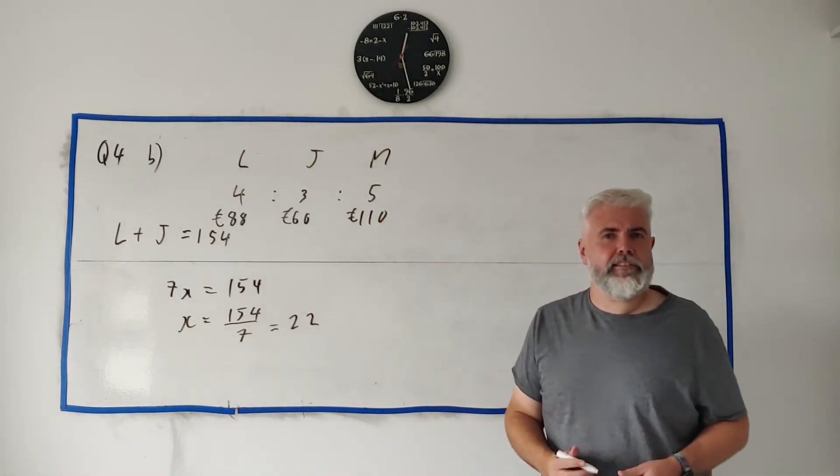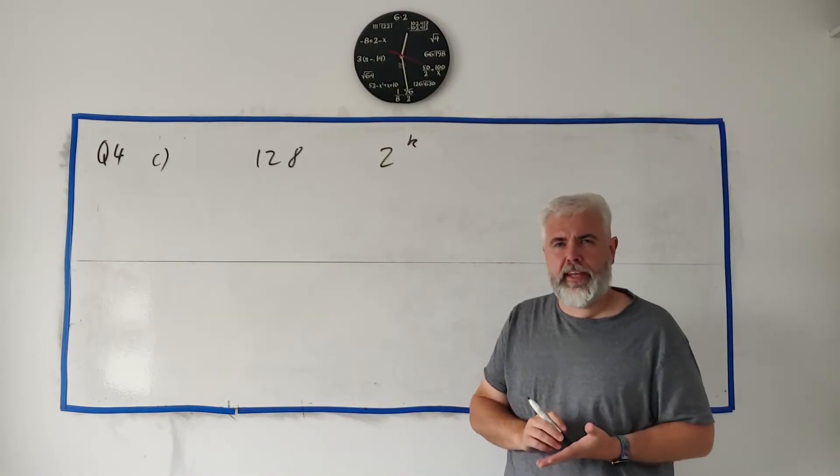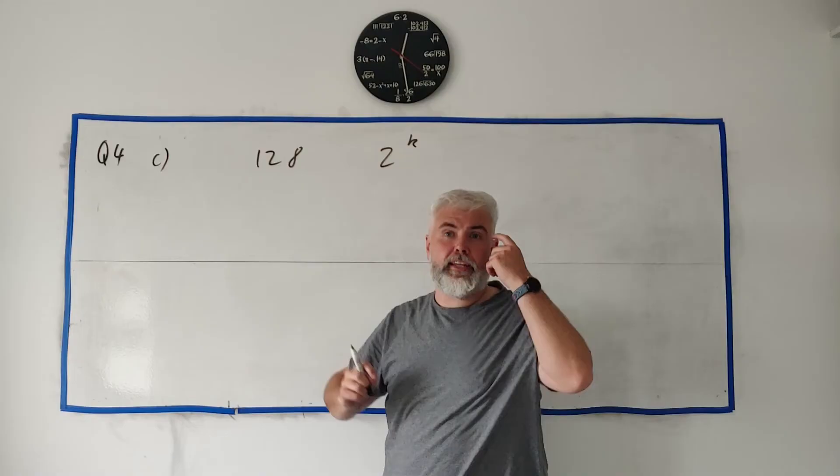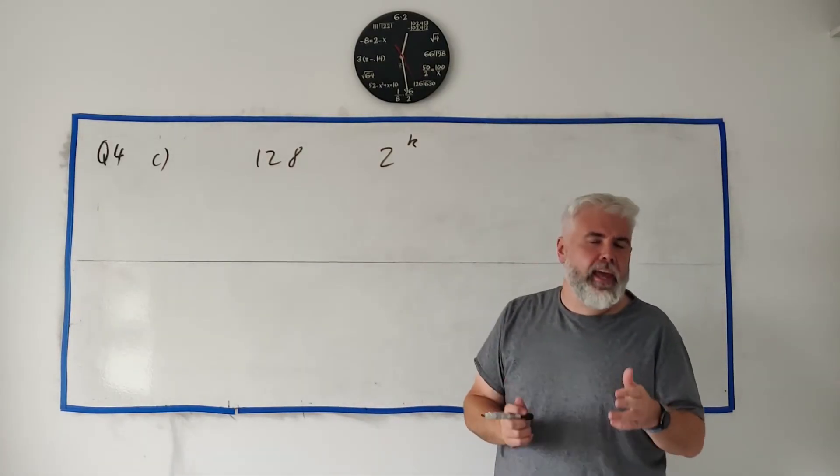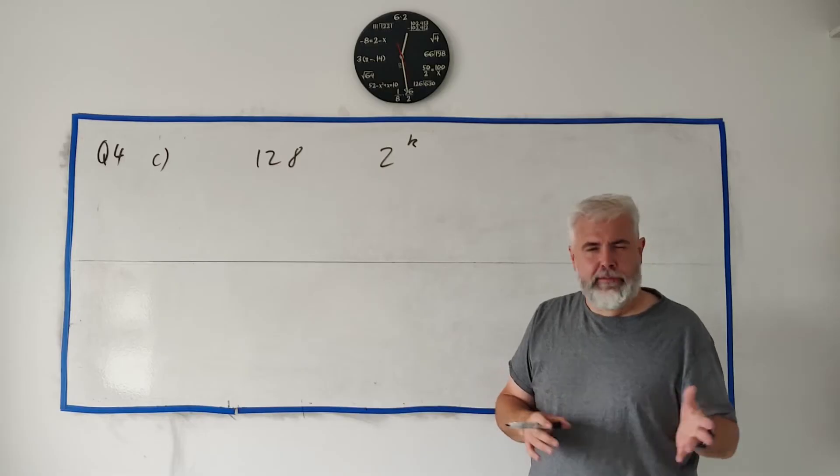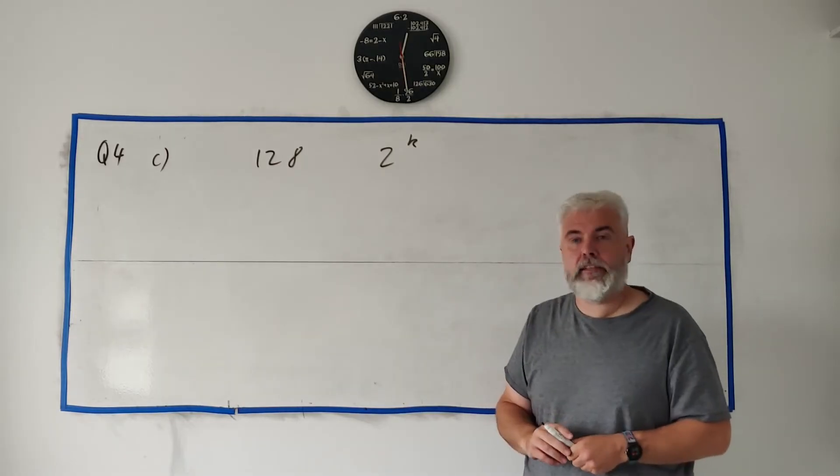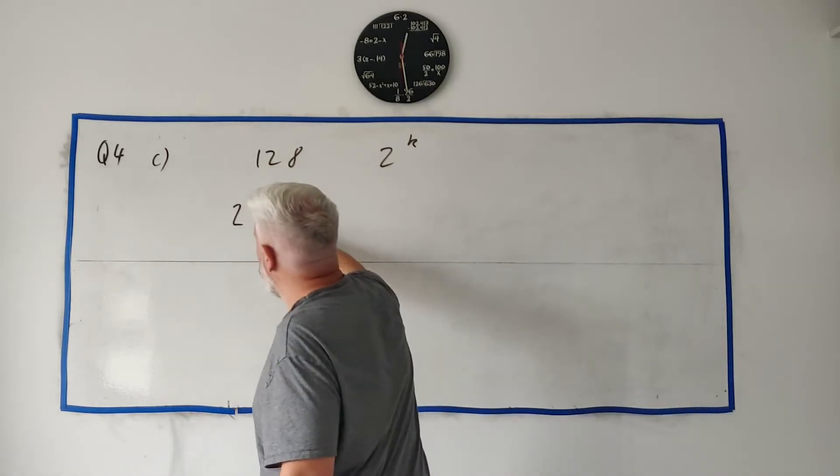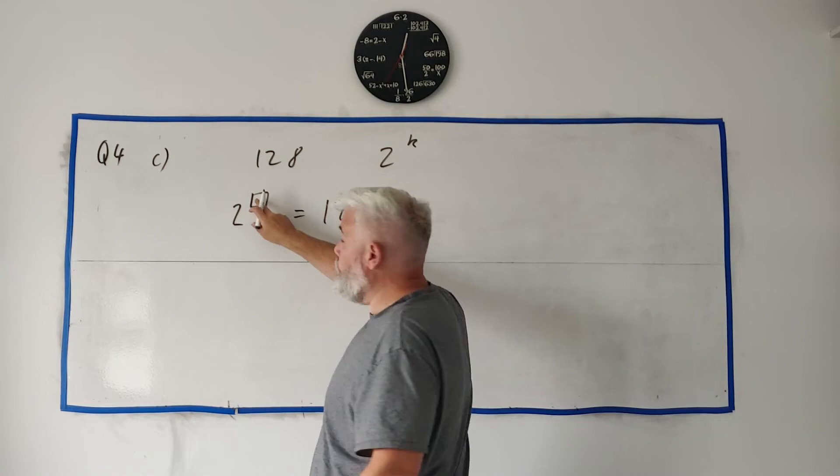In part C part 1, they asked you to write 128 in the form of 2 to the power of K, where K is an element of N. Very confusing way to write that. What they're really saying is 2 to the power of something is equal to 128, what number goes there?